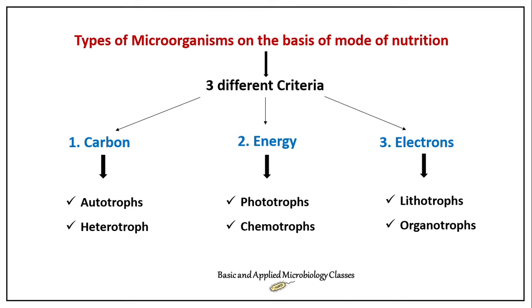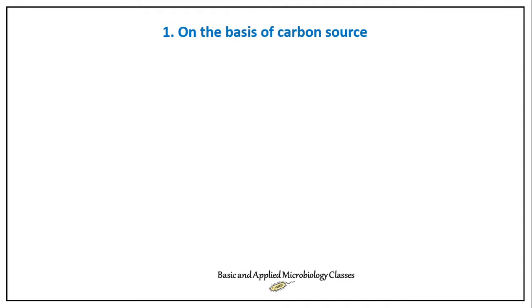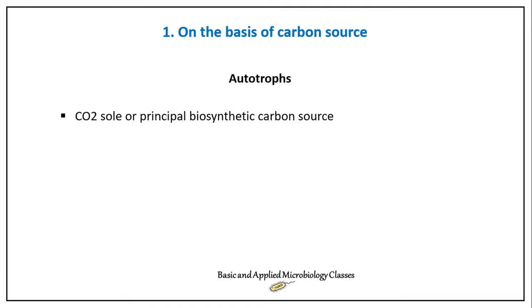Now let's learn about these criteria in detail. On the basis of carbon source, the first type is autotrophic. When we say a microorganism is autotrophic, it means they can use carbon dioxide as their sole or principal biosynthetic carbon source — such microbes use CO₂ as their major source of carbon.